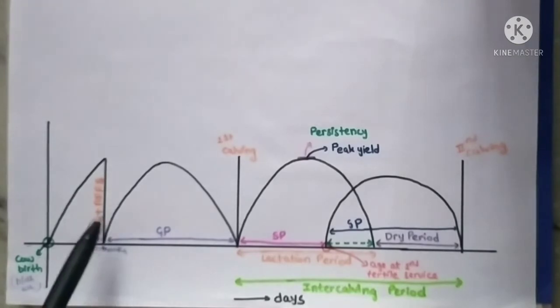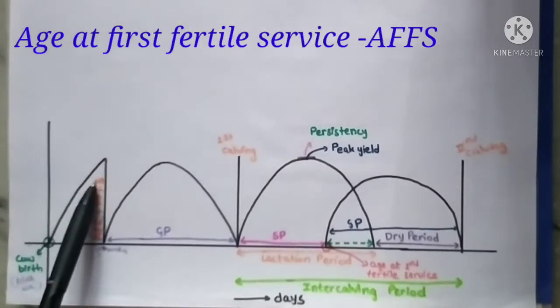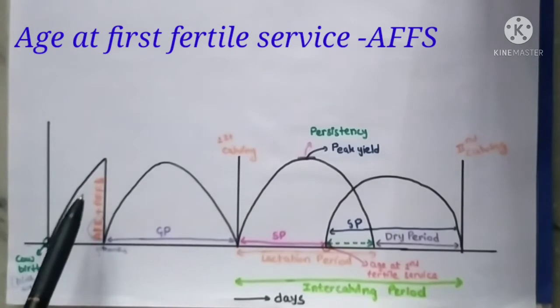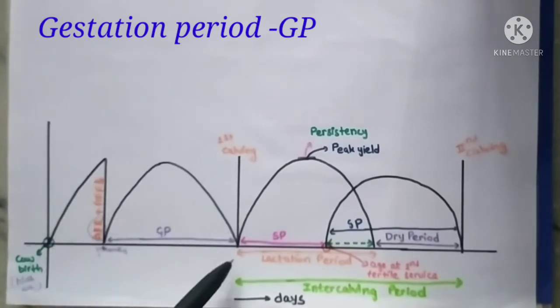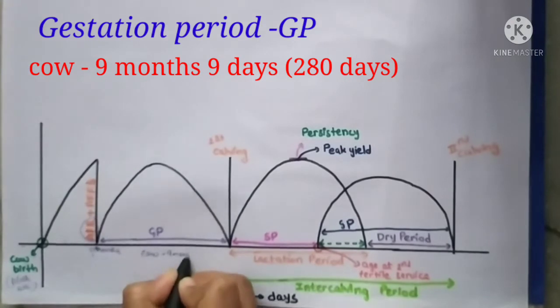At that time, if age at first fertile service (AFFS) occurs, which means the first successful conception occurs, then the gestation period starts. The gestation period of a cow is nine months and nine days, approximately 280 days.